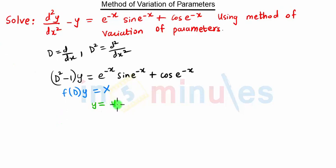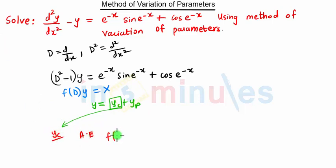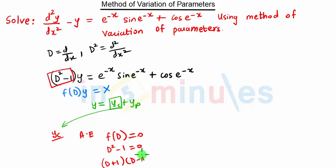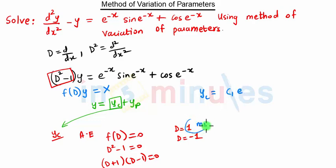The solution is given by y = yc + yp. First we find yc. To find yc we need the auxiliary equation, given by f(D) = 0. Here f(D) = D² - 1 = 0, which factors as (D + 1)(D - 1) = 0, giving roots D = 1 and D = -1. So yc = c₁e^x + c₂e^(-x).